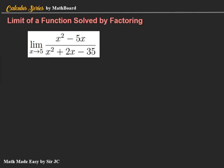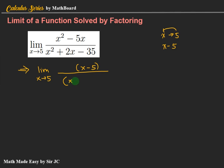Let's have another example: the limit of x squared minus 5x over x squared plus 2x minus 35 as x approaches 5. When you replace x by 5, the result is indeterminate, so we will factor. Since x approaches 5, we transpose to get x minus 5, meaning one of the factors is x minus 5 in both numerator and denominator. In the numerator, x squared minus 5x has a common factor of x, giving x times x minus 5. So we are correct that one of the factors in the numerator is x minus 5.